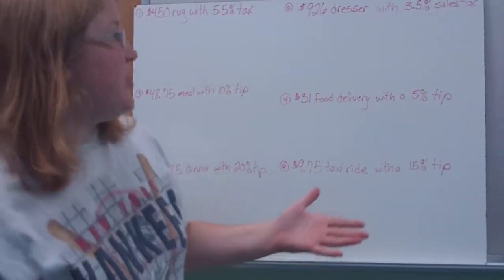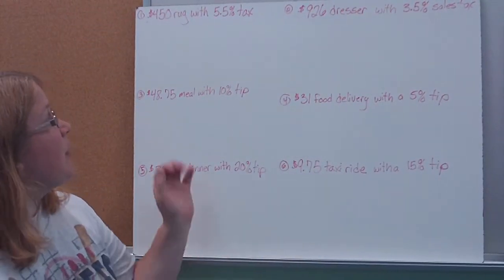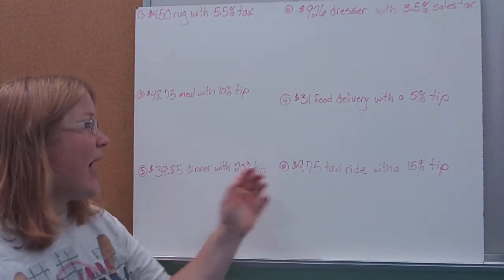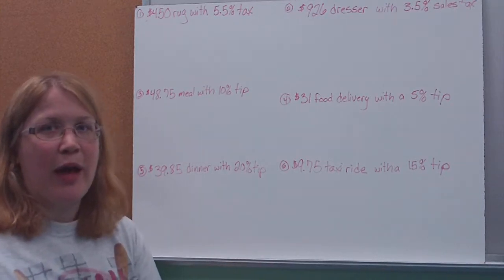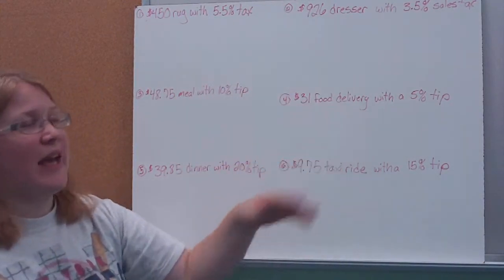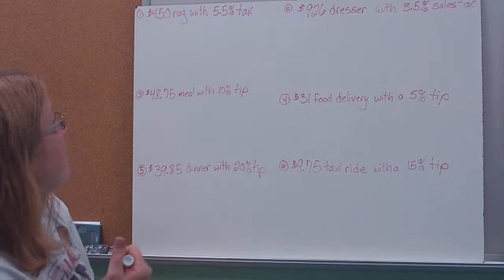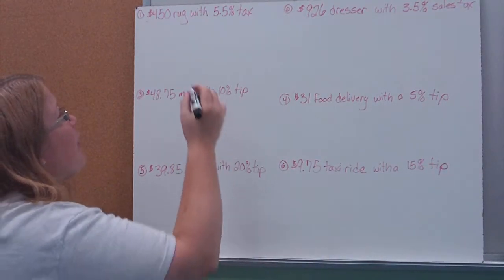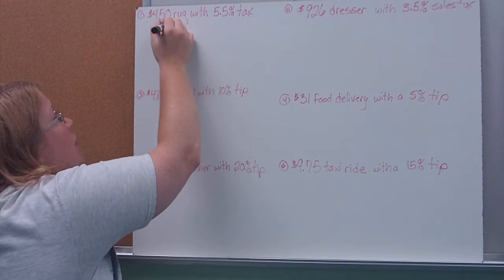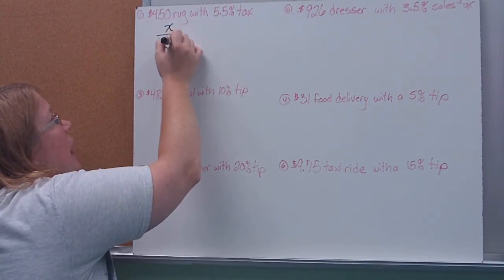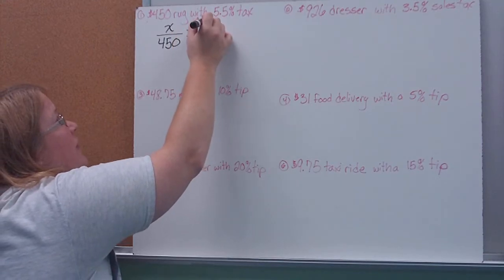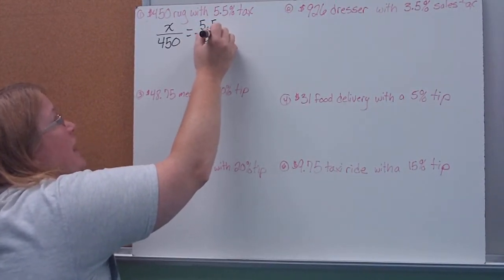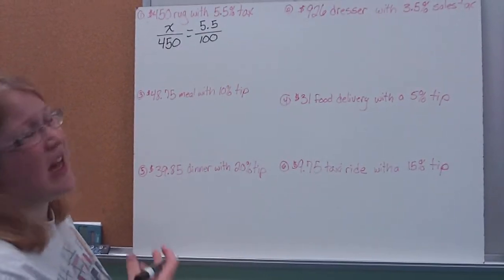All right, so here we're just going to calculate, the first four, we're just going to calculate either the tip or the tax. The last two, I'm going to find out what the total price would be. So these ones, we're just going to calculate the tip or the tax. So I have a $450 rug that has a 5.5% tax. So I don't know how much I'm paying in tax. I know that the list price is $450 and that my tax rate is 5.5%, which means we're not in New Jersey. I don't know where we are.